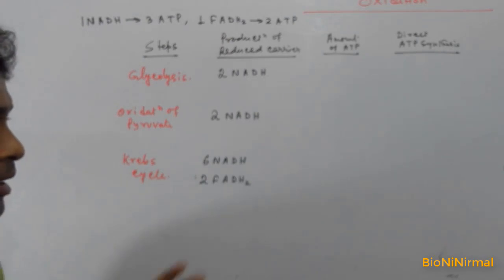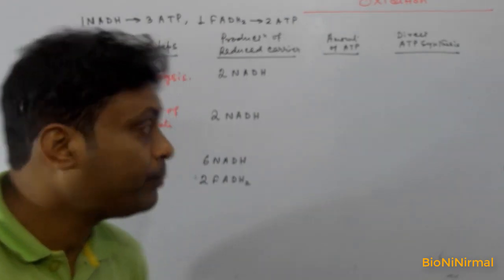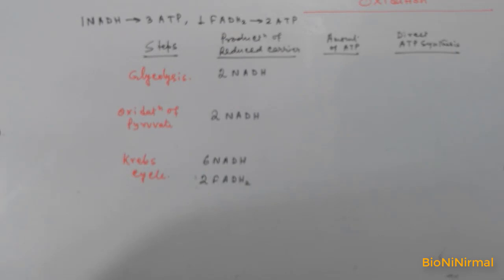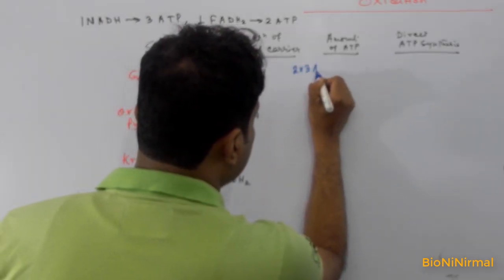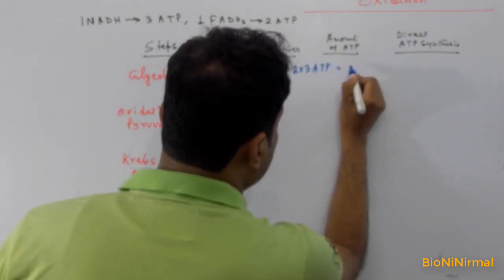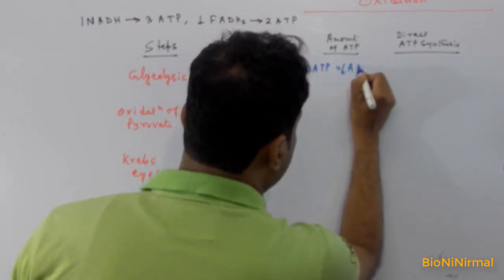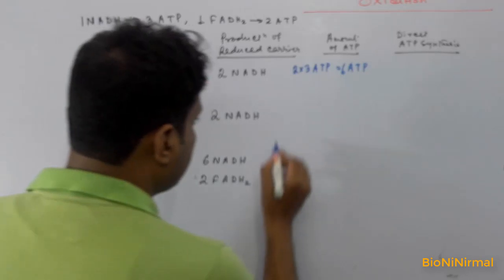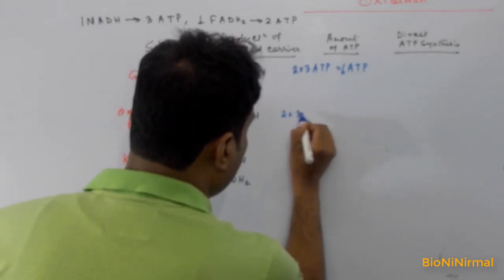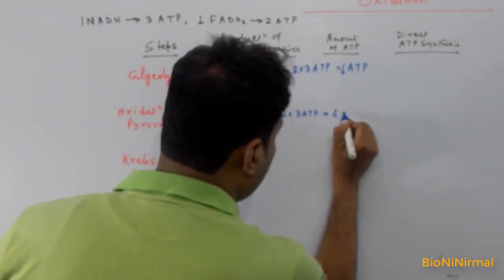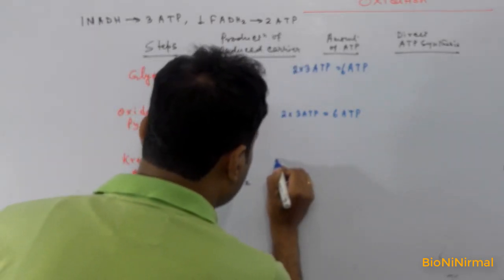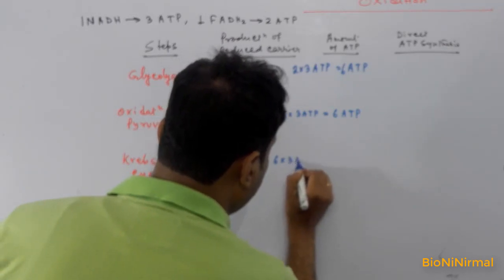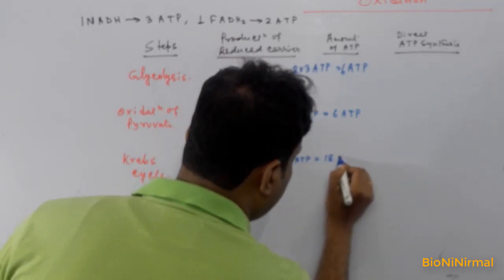By the process of the electron transport system, NADH and FADH2 produce a huge amount of ATP. One molecule of NADH produces three molecules of ATP, and one molecule of FADH2 produces two molecules of ATP. So the two NADH from glycolysis produce six ATP, the two NADH from pyruvate oxidation also produce six ATP, and the six NADH from the Krebs cycle (6 × 3) produce eighteen ATP molecules.